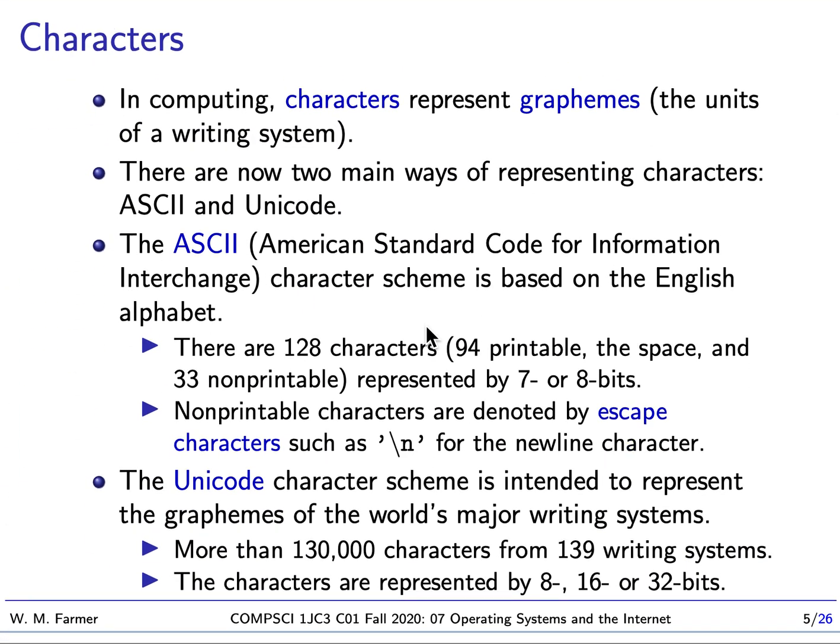Let's move on to characters. In computing, characters represent graphemes, which are units of a writing system. Of course, there are many kinds of writing systems, and each writing system has its own kind of graphemes. On computers, we need a way of representing characters. There are two main ways of doing this: ASCII and Unicode.